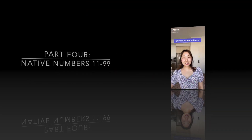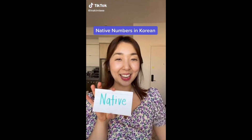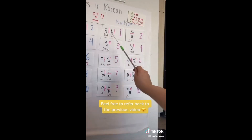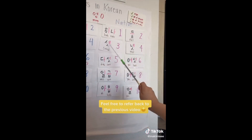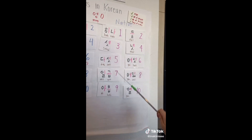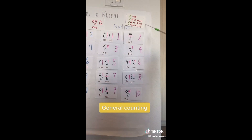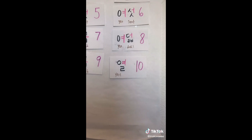Native numbers in Korean, part 2. Last time we covered native numbers from 1 to 10: 하나, 둘, 셋, 넷, 다섯, 여섯, 일곱, 여덟, 아홉, 열. These are used for general counting, like counting ages, people, things, and the hour of a day. But what's after 10?